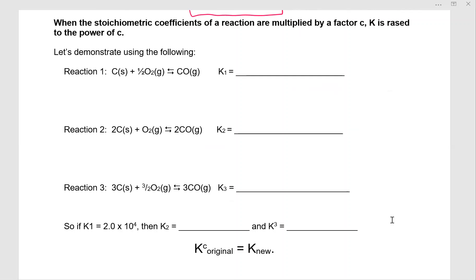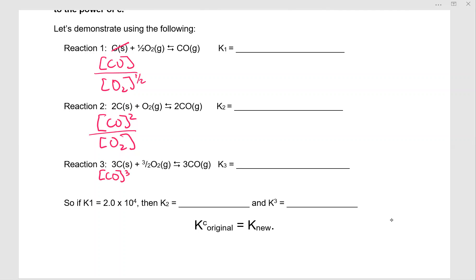We're going to write the equilibrium expressions. We have CO and that's over O2 to the one half and we omit the carbon because it's solid. And then our next one we have CO squared and this is over O2. And then our third one is CO cubed over O2 raised to the three halves. So if K1 equals 2.0 times 10 to the fourth, then we should be able to figure out what K2 or K3 are because notice all we've done is we've gone from one squared cubed.